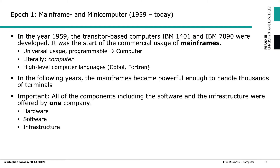There is one important difference compared to today's computer situation. At this point in time, all components — including software and infrastructure like printers or keyboards — were offered by one company. If you bought a mainframe from IBM, you had to buy the software, monitors, and all hardware from IBM as well.